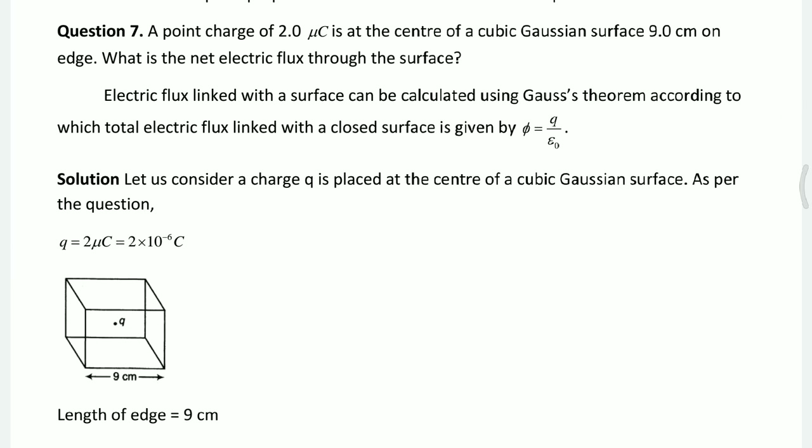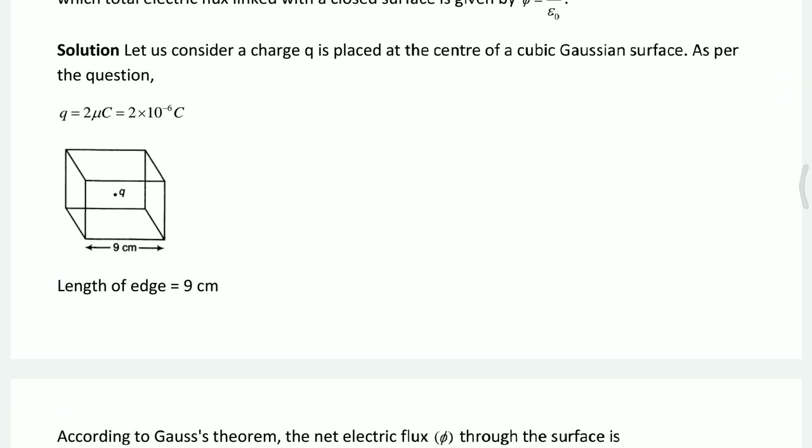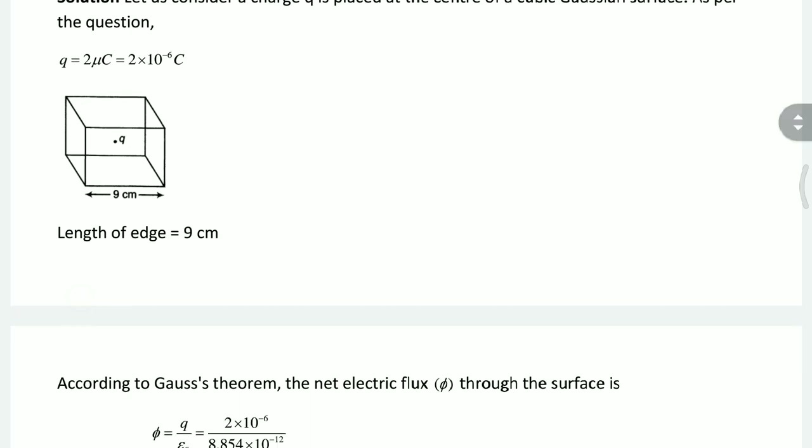Question number 7: a point charge of 2.0 microcoulomb is at the center of a cubic Gaussian surface with 9.0 cm on each edge. What is the net electric flux through the surface? We use Gauss's theorem, according to which the total electric flux linked with a closed surface is given by Q divided by epsilon naught. Consider the charge Q placed at the center of the cubic Gaussian surface, and make a diagram as per the question.